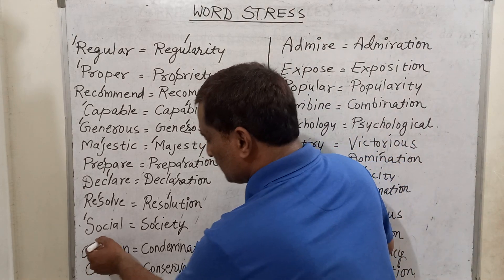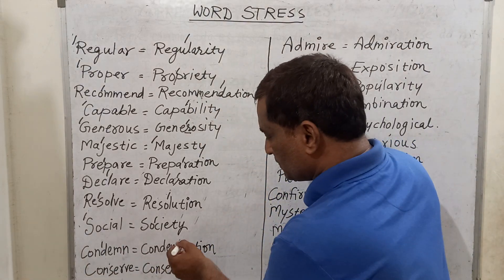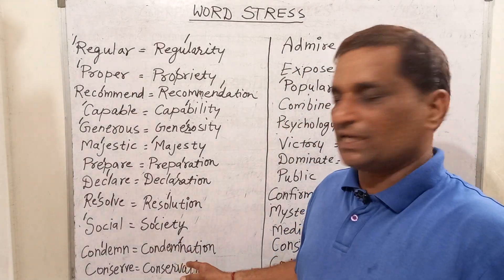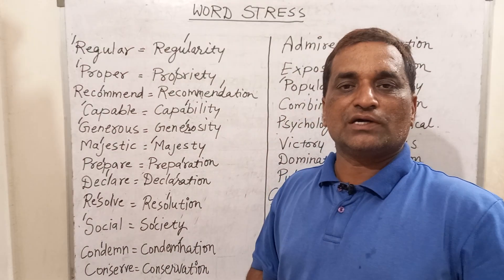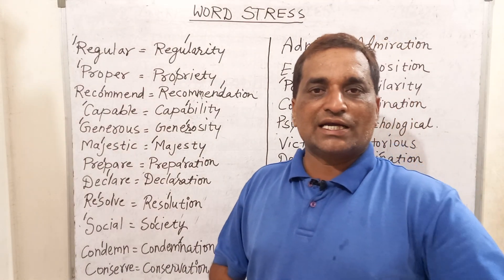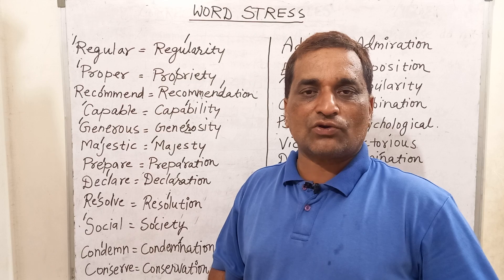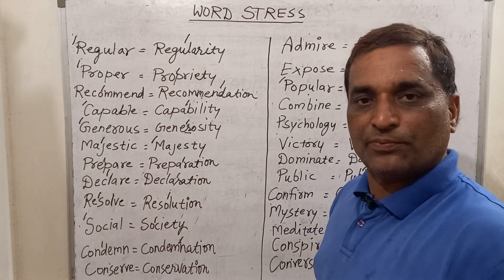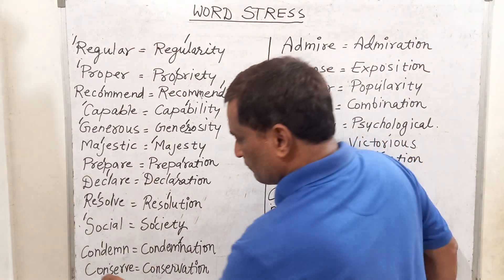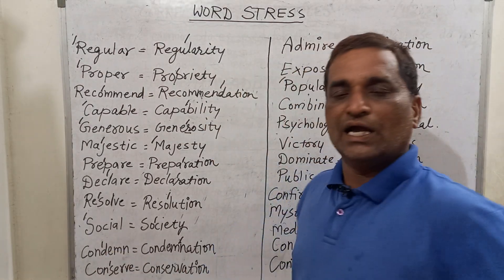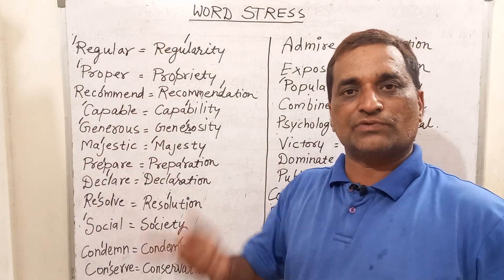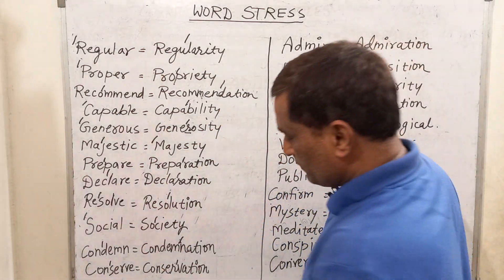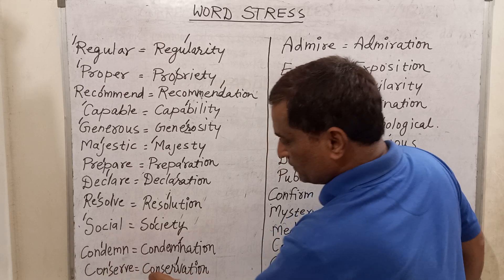Next is 'condemn' and 'condemnation'. The pronunciation for the next word will be 'condemnation'. Condemn means to denounce strongly — for example: we condemn this cowardice act in the strongest possible terms. And for 'condemnation', the stress will come before N. For 'conserve', the stress comes before S, and for 'conservation', the stress will come before V: 'conserve' and 'conservation'.